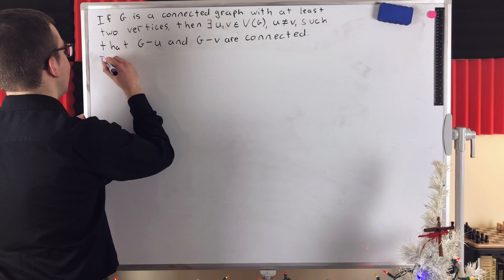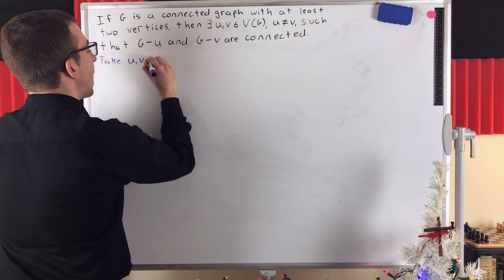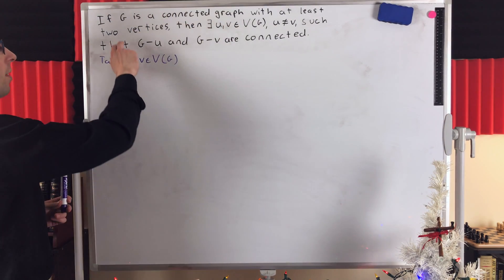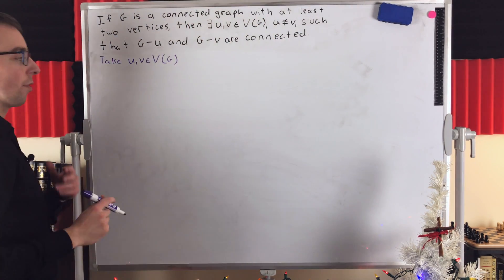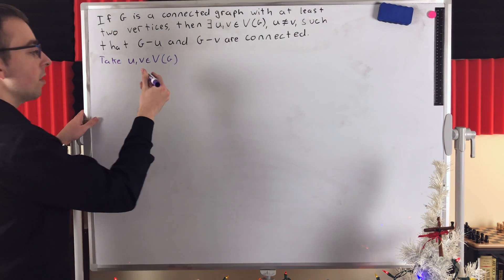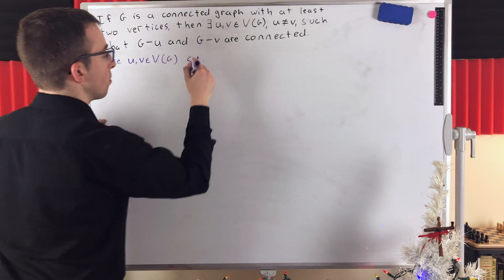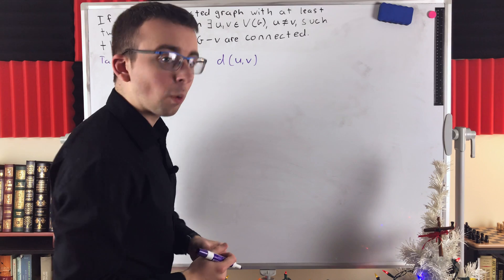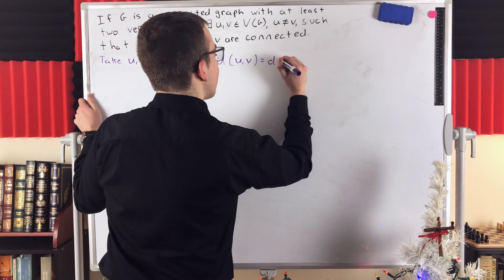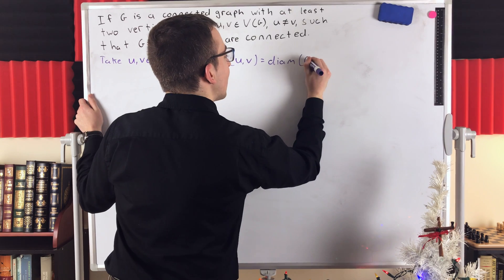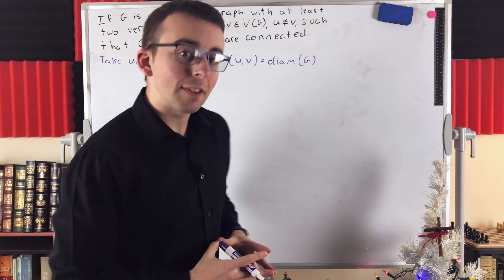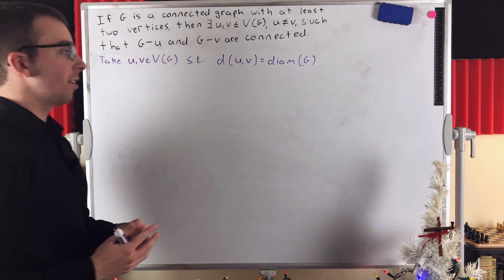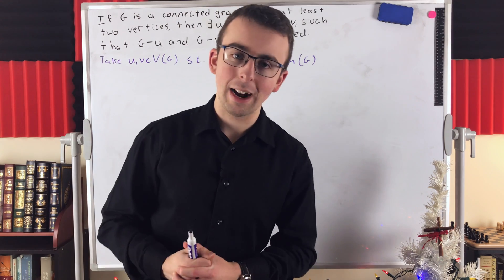Take two vertices U and V from the vertex set of G — remembering that G is a connected graph with at least two vertices — such that the distance from U to V, which is the length of a shortest path connecting U and V, equals the diameter of the graph G. The diameter of a graph is the greatest distance between any two vertices, so we're taking two vertices of greatest distance in G.